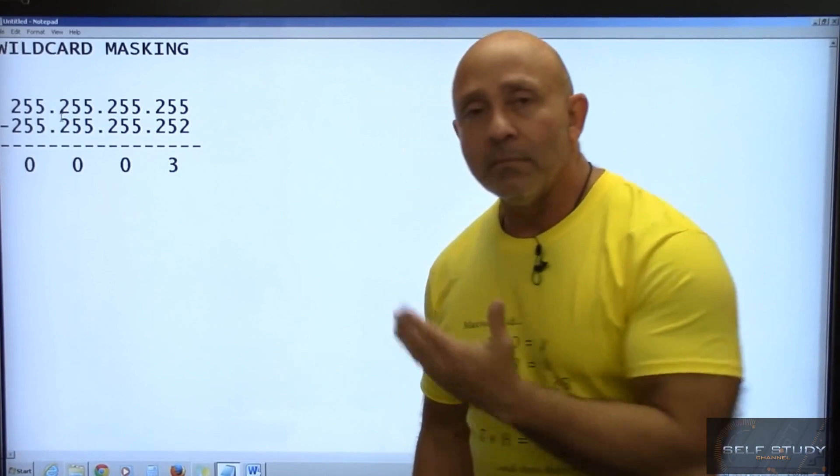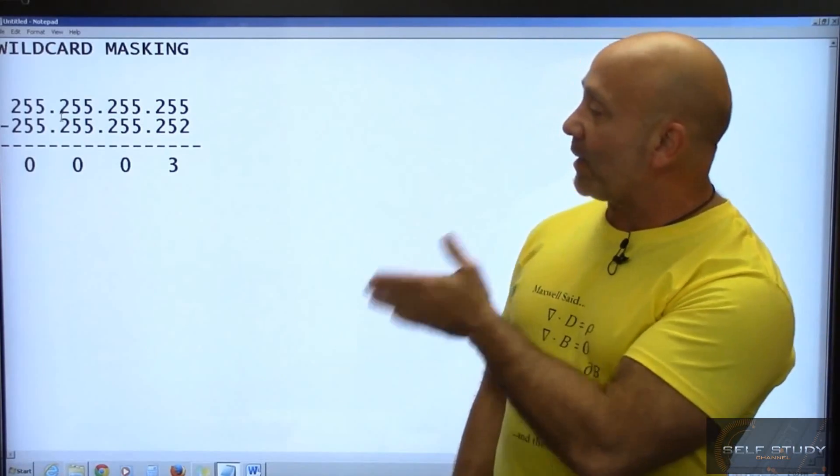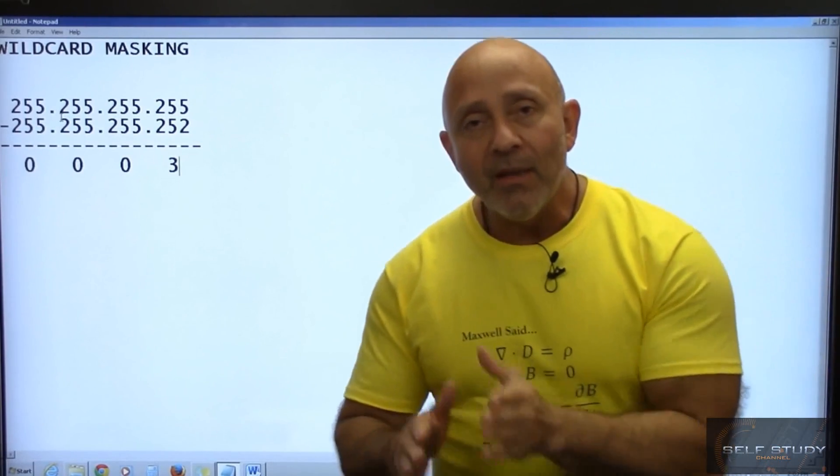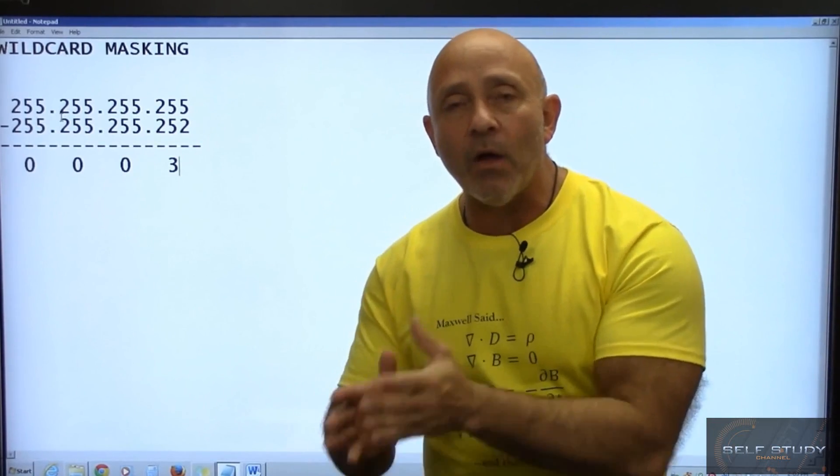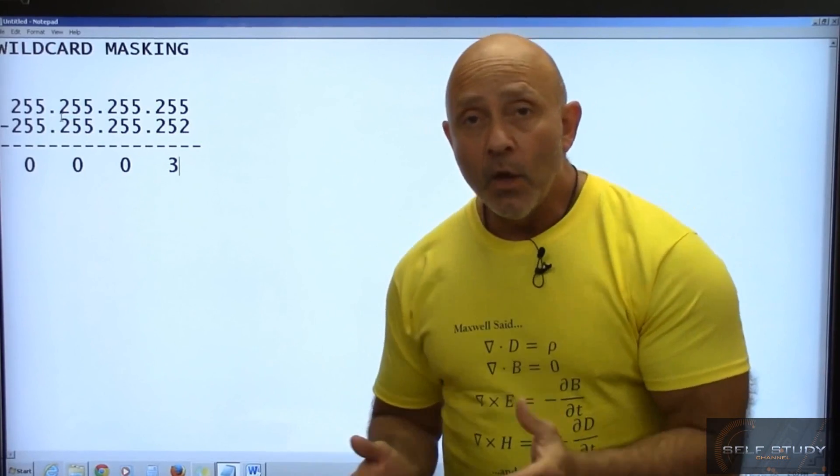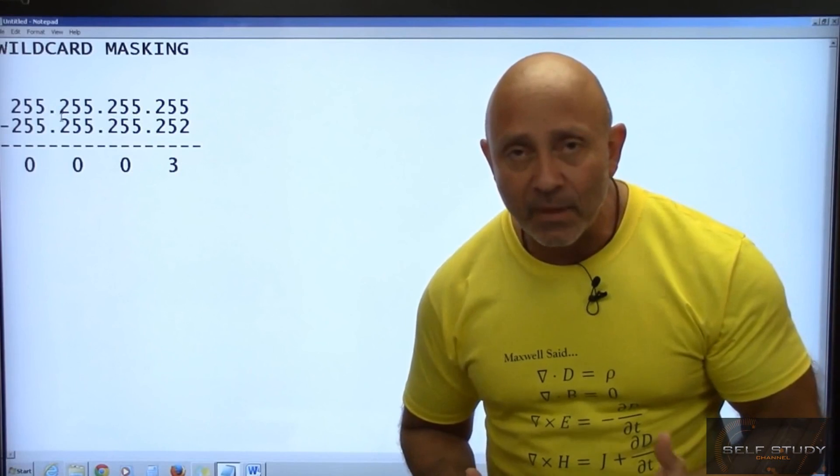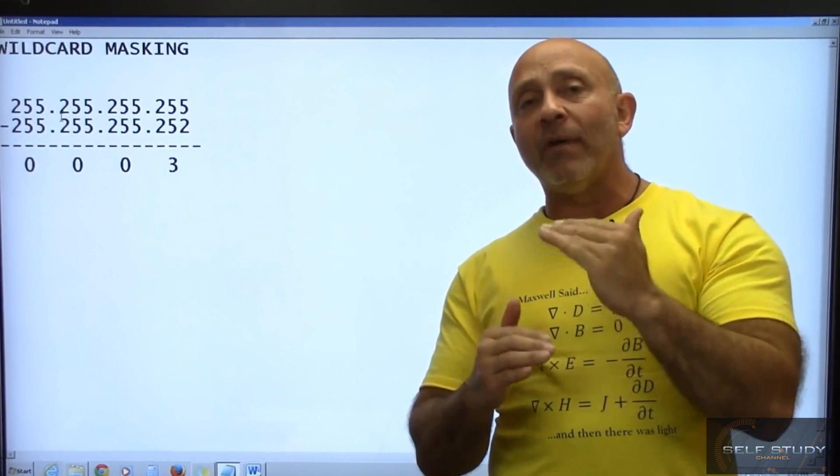Zeros mean match exactly, so you're going to match exactly the first three octets and then any number that falls in that range. Remember, the IP address is already set on the interface and the mask, so when you put in a wildcard mask it's going to know the range of IPs that it's looking for.